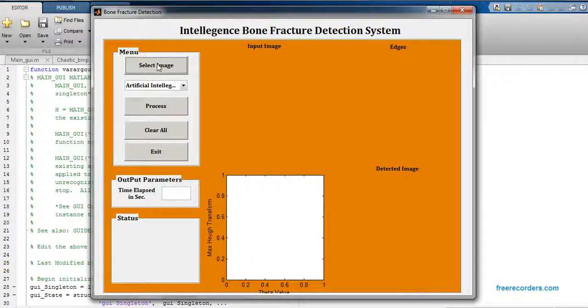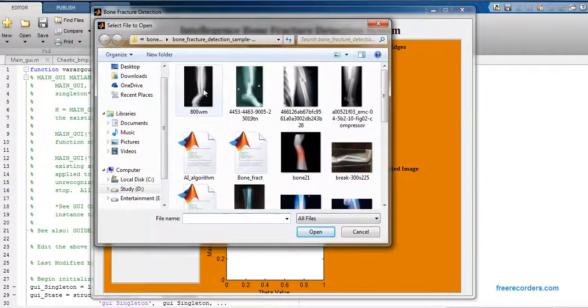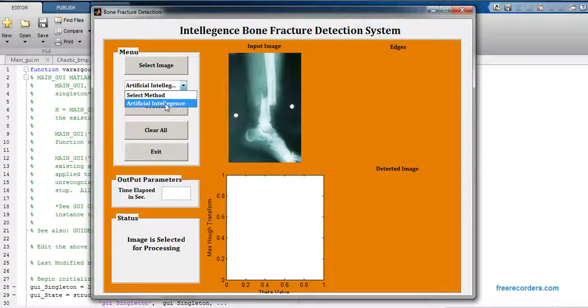I just want to run this code for one more image. Just click on open, select same method, just click on process.